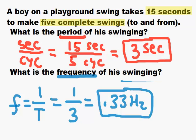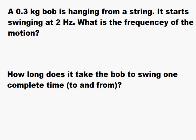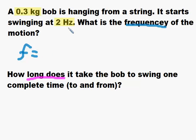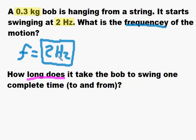Let's try another example. A 0.3 kilogram bob — remember, bob is the name of the thing that swings on a pendulum hanging from a string — starts swinging at 2 hertz. What is the frequency of the motion? This problem is either tough or easy depending on how you look at it, because it really comes down to recognizing the units of hertz. When you see hertz, you recognize it as frequency. So the answer is just 2 hertz — there's nothing to calculate. That's how it'll be on the quiz and the homework.